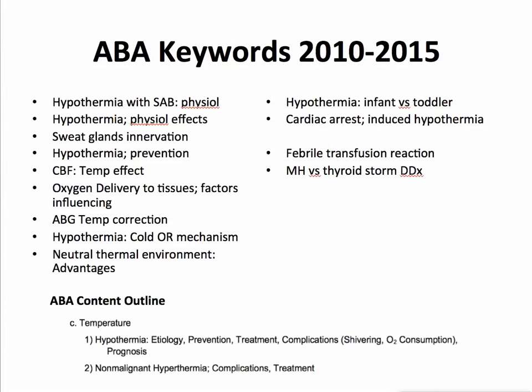If you look at the ABA keywords related to this topic of hypothermia and hyperthermia, you can see keywords such as spinal anesthesia and hypothermia, the physiology, physiologic effects of hypothermia, sweat glands and how they are innervated — sympathetic cholinergic — how can you prevent hypothermia, forced air warming is number one, and what happens to cerebral blood flow as a patient becomes hypothermic — it decreases.